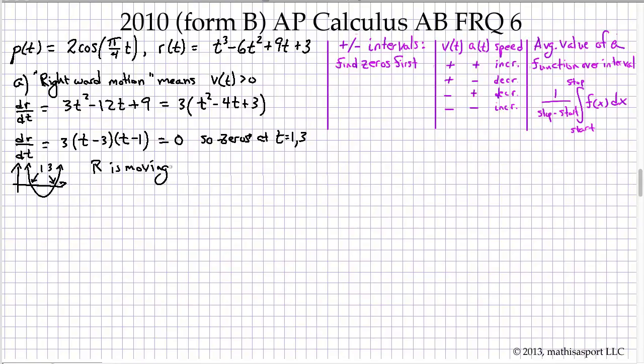So R is moving rightward from t equals 0 to 1, and from t equals 3 to 6. I'll leave it as an exercise to the reader why it is that I knew that this was an inequality with an equal, this was a strict inequality, this was a strict inequality, and this is an inequality that includes an equal sign.